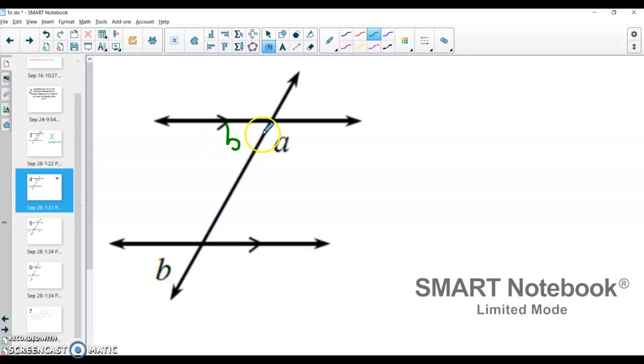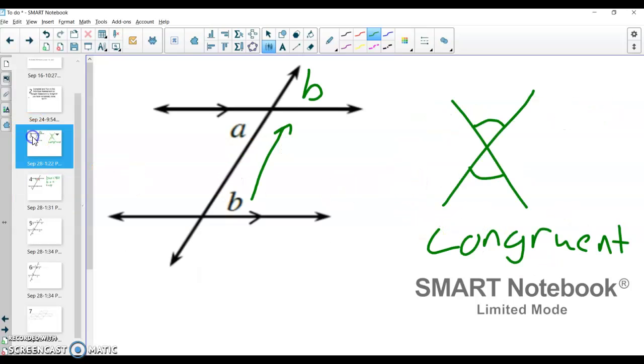So now B and A are not in that vertical angle relationship. They're in a different relationship where B, that angle B right here, and this angle A right here are creating a straight line. Since B and A create a straight line, that means B plus A equals 180 degrees, because 180 degrees is a straight line, or a half a circle here. So that means B and A would be supplementary.